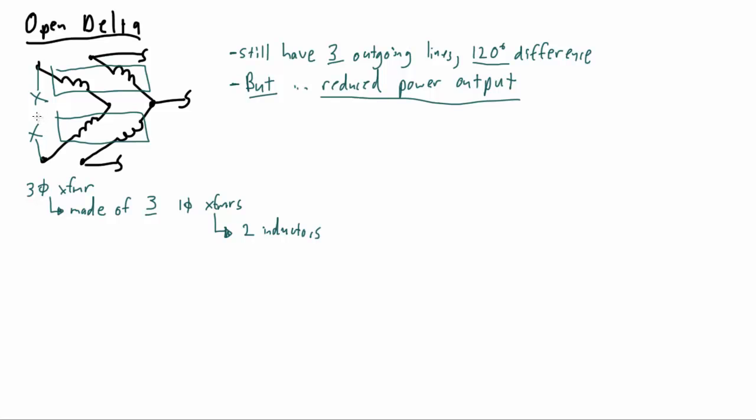When you also look at this diagram you see that we have in a sense two deltas, two open deltas as part of this transformer configuration. And that's where we also get the alternate term for the open delta configuration which is called a VV configuration.